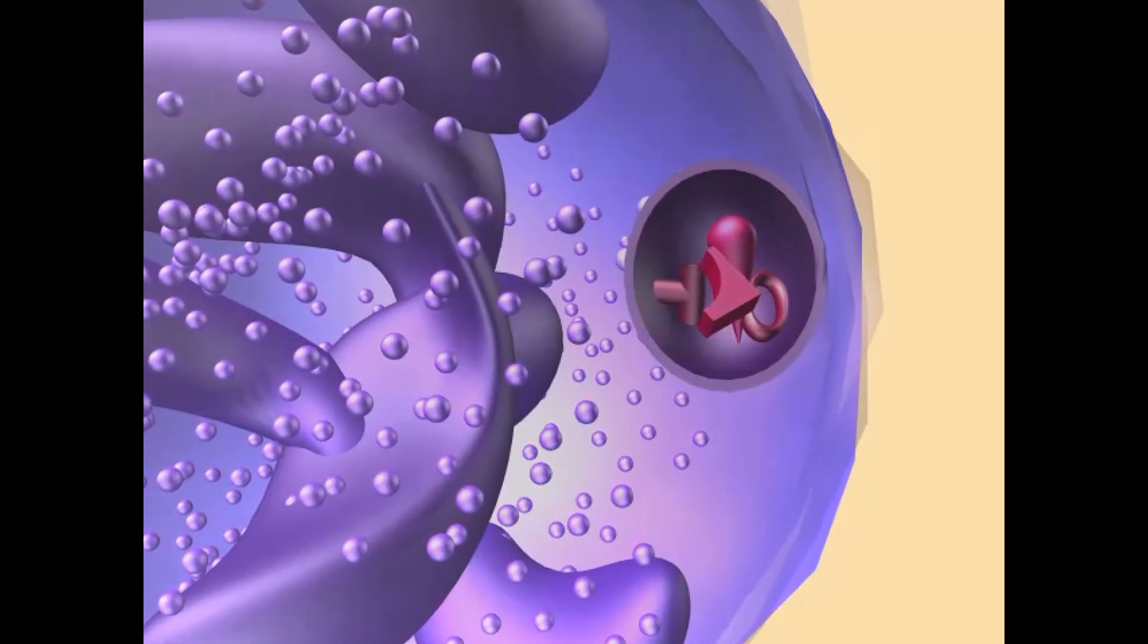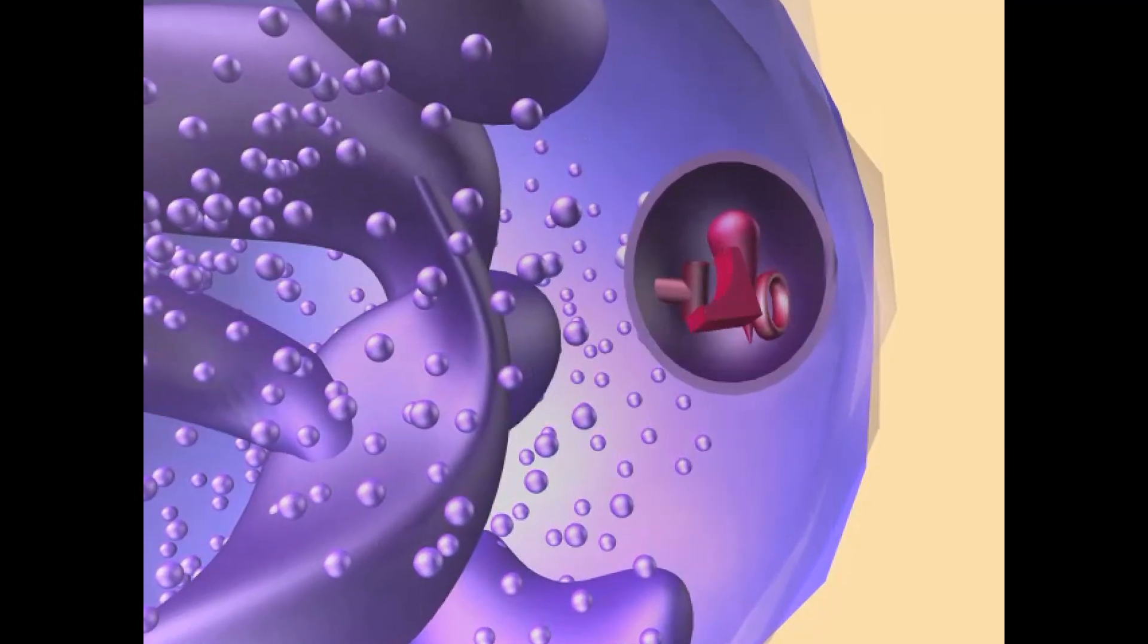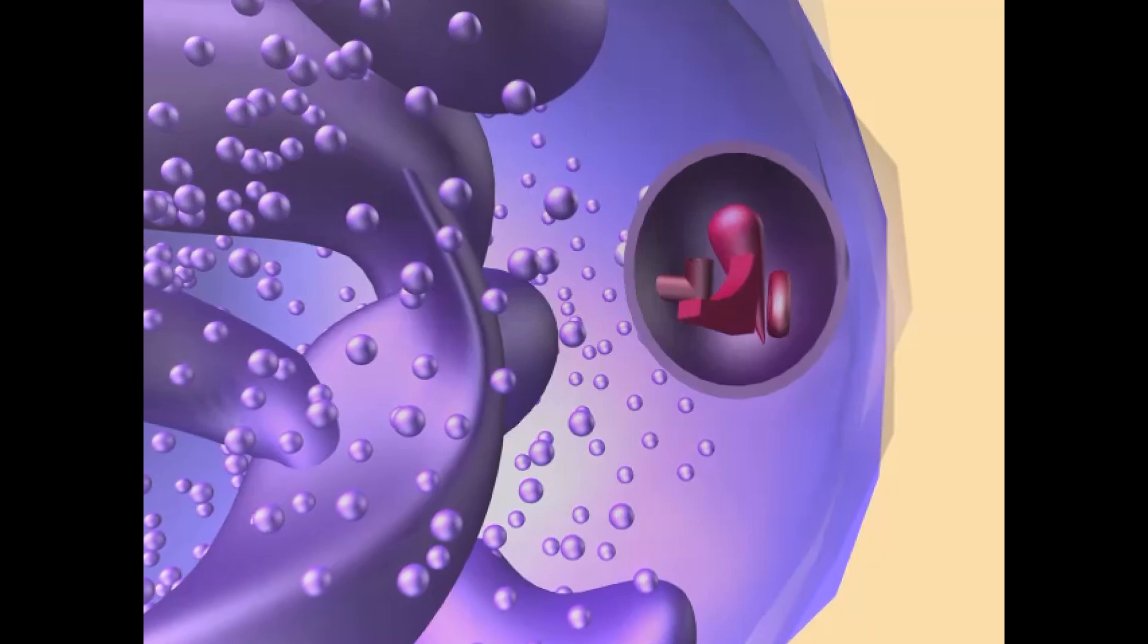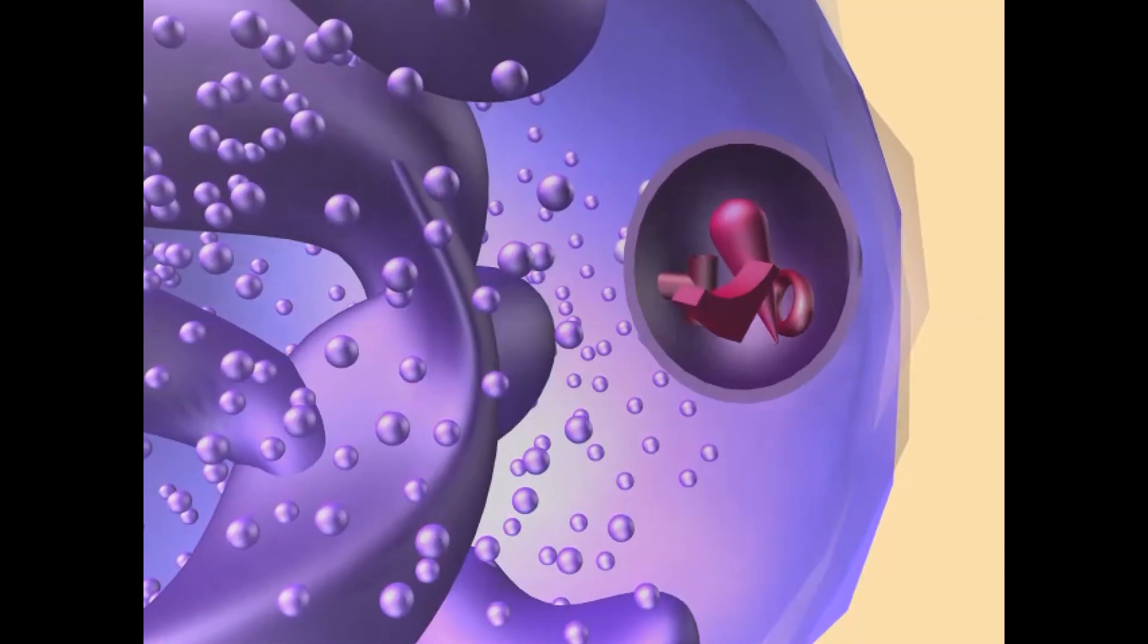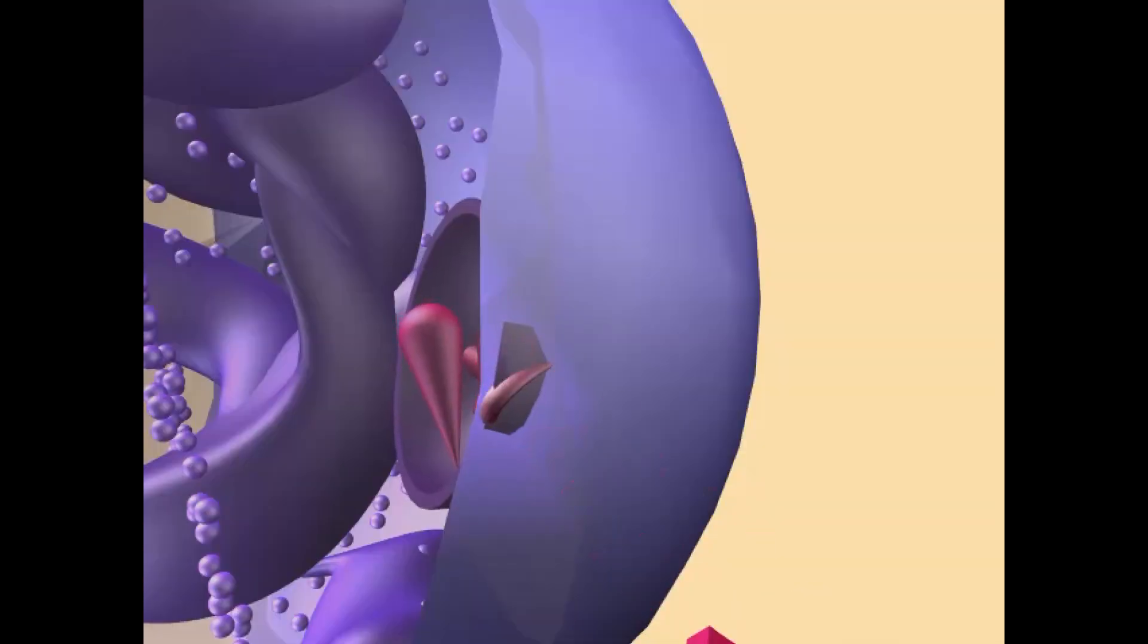A vesicle may contain undigestible waste. Such a vesicle may be moved to the cell membrane in the process of exocytosis.